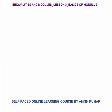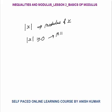Hello, this is Inequalities and Modulus. I will discuss the basics of modulus. This notation — X with bars on either side — represents the modulus of X. What is special about the modulus is that its value is always greater than or equal to zero. The minimum value of modulus is always zero; it can never be less than zero.